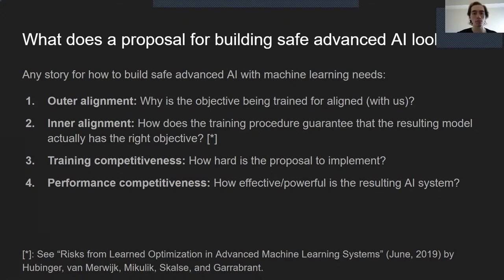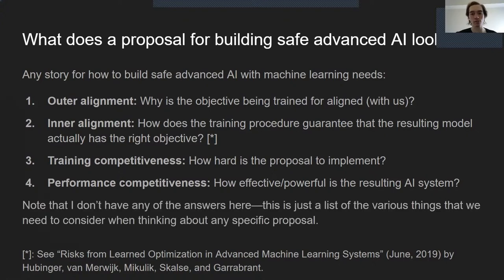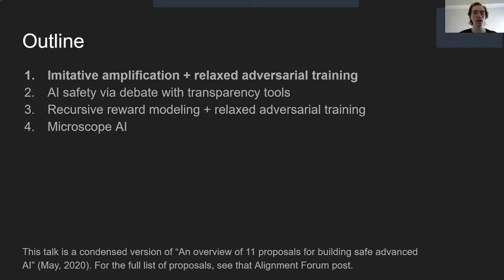These are the four basic components. I don't claim to know whether any proposal successfully addresses each of them — it's just a list of things to think about when looking at any individual proposal for the overall AI safety problem. Here are the four proposals we'll be talking about in this talk. There are other proposals I won't cover, but you can find them in a post which should be linked along with this talk. We're going to start with an approach called imitative amplification.